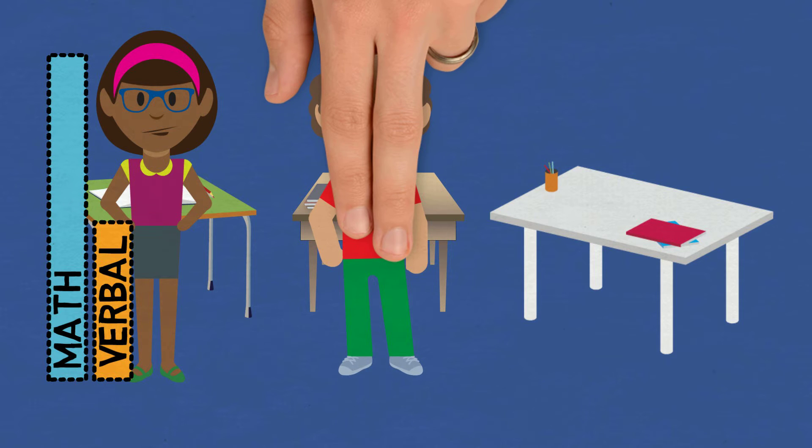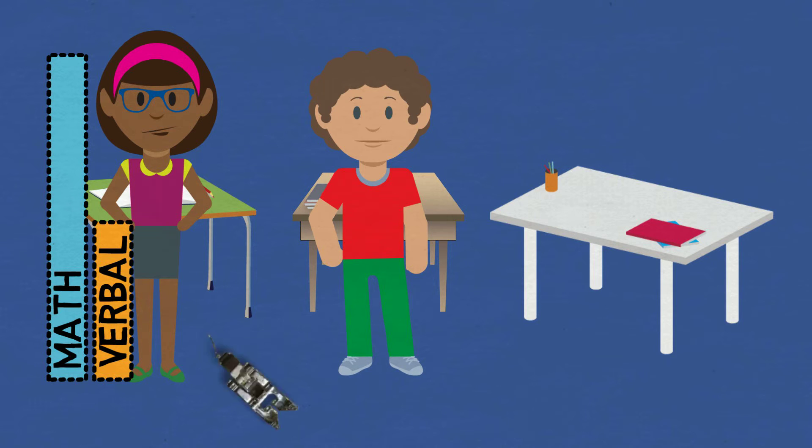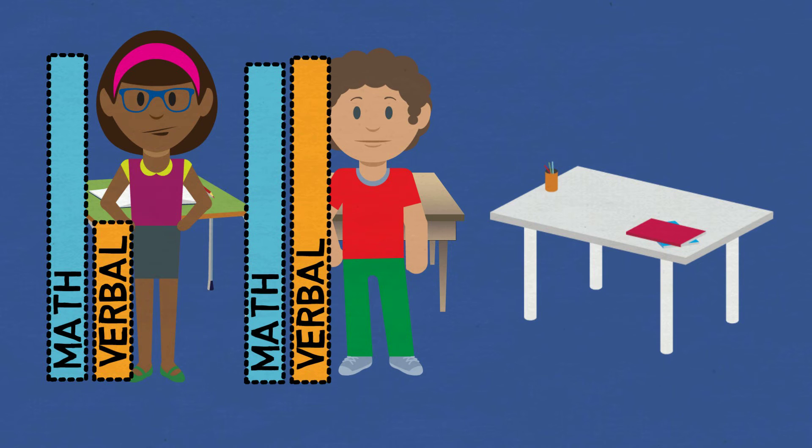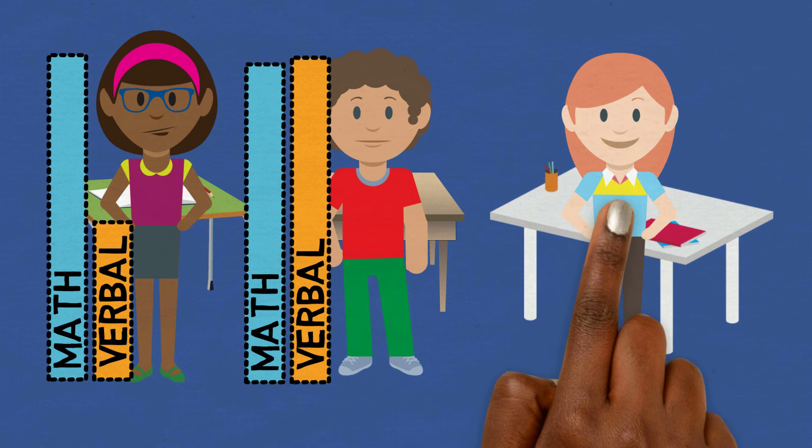Isaac sits in desk number two. He has always gotten all-around excellent scores on his grade level tests. And Paige sits in desk number three.